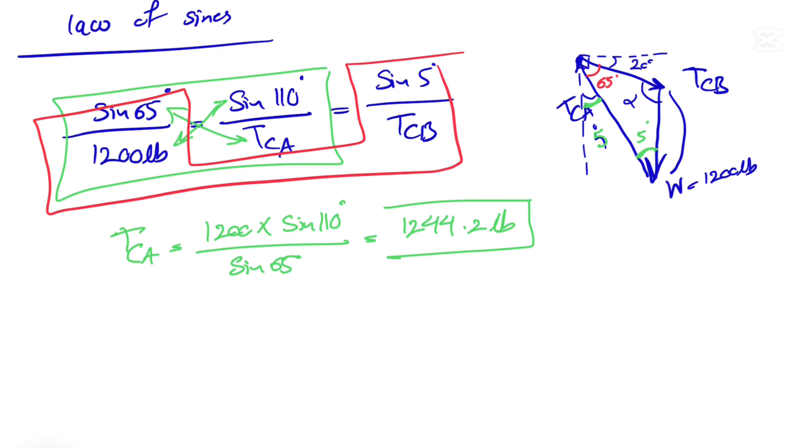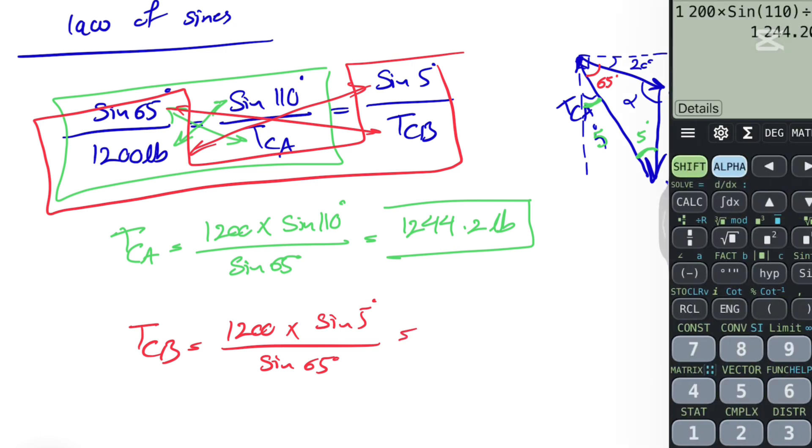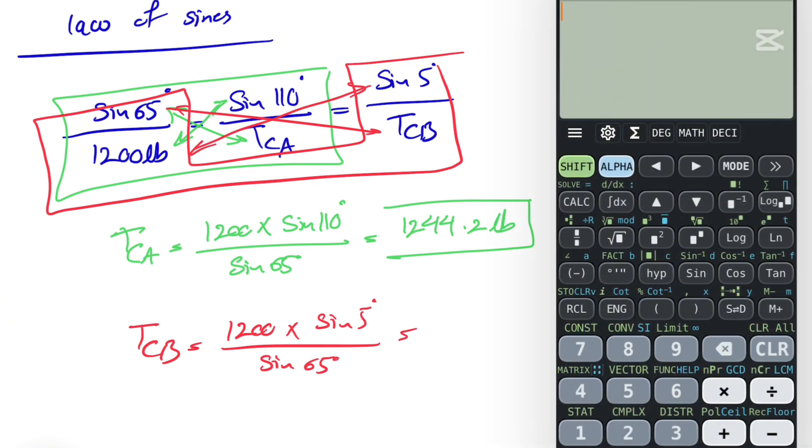And for TCB, we can consider these two. Same thing, we're going to cross multiply. So TCB would be 1200 times sine of 5 degrees divided by sine of 65 degrees.